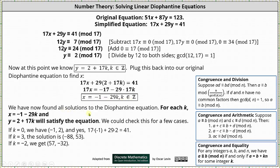We have now found all the solutions to the Diophantine equation. For each k, we have x = -1 - 29k and y = 2 + 17k, which will satisfy the equation.